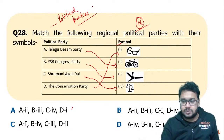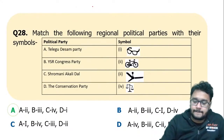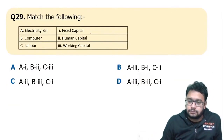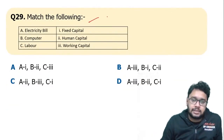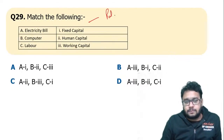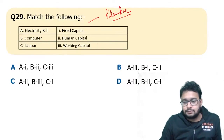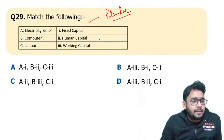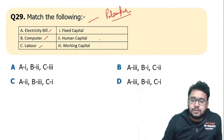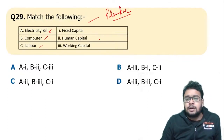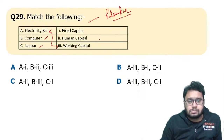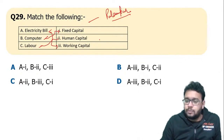Match the following from the first chapter of Class 9 — The Story of Village Palampur. Electricity bill, computer, and labor: which is working capital, fixed capital, or human capital? Electricity bill is working capital, computer is fixed capital, and labor is human capital. So B is the correct answer.